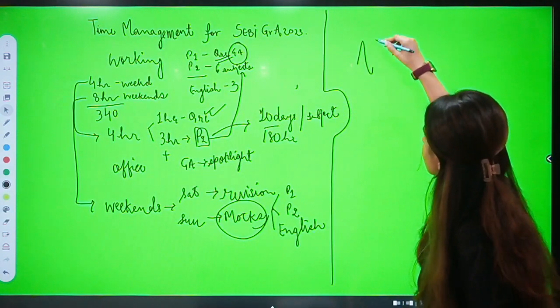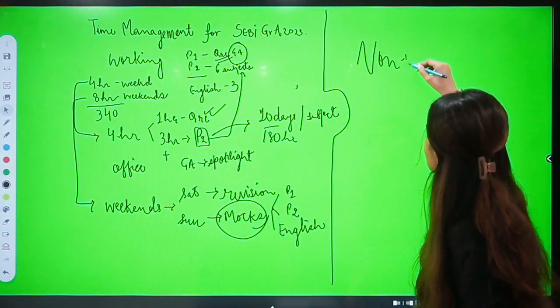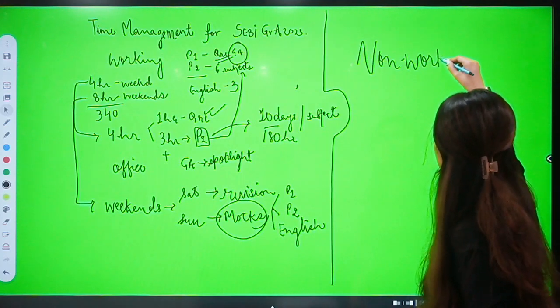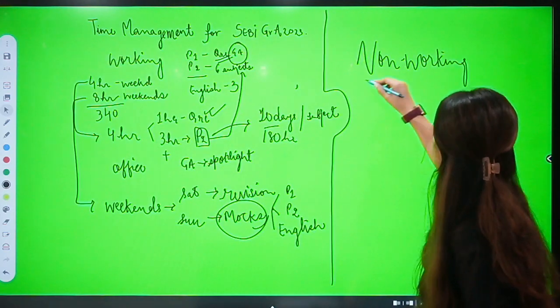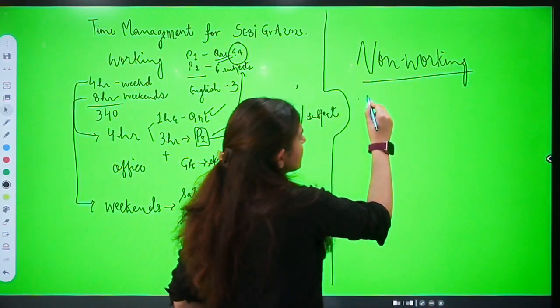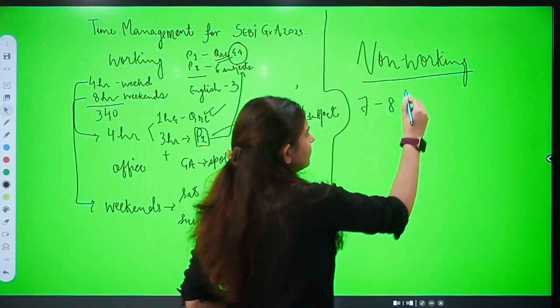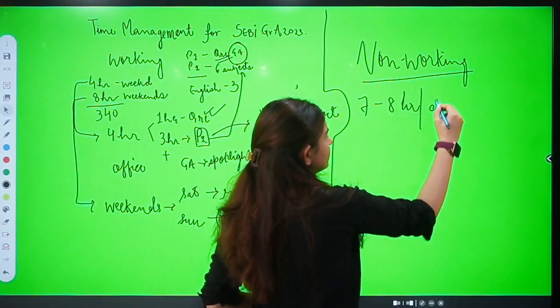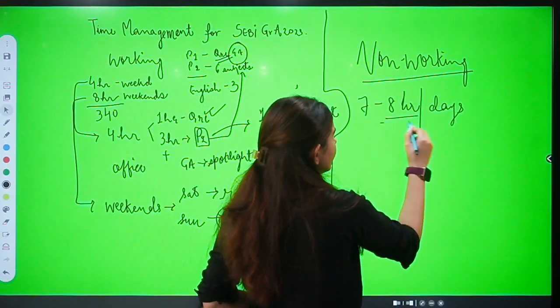Now talking about non-working students. Since you have ample amount of time, you should be able to give 7 to 8 hours per day. How do we divide these 8 hours per day?